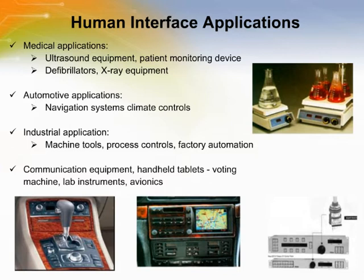Greyhill human interface encoders are used in many industries. They are used in medical devices such as ultrasound equipment, patient monitoring devices, defibrillators, and x-ray equipment. They are also used by the automotive industry in dashboard and console navigation systems and climate controls. Industrial applications include machine tools, process controls, and factory automation. Encoders can also be found in lab instruments, avionics, communication equipment, and handheld tablets.